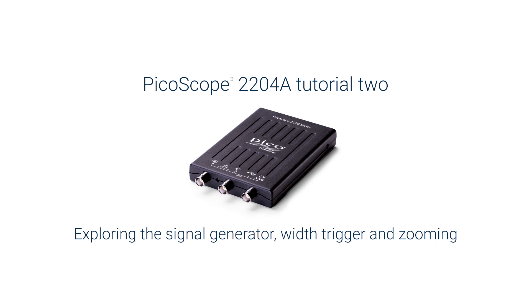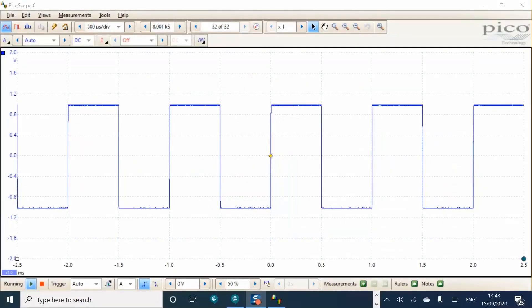In part 2, we explored the signal generator further and used the arbitrary waveform generator or AWG to create a glitch and then set up a trigger condition to isolate it. The setup begins where part 1 ended with a 1 kHz square wave displayed on channel A and the x10 probe connected to the AWG using a BNC to crop clip cable.